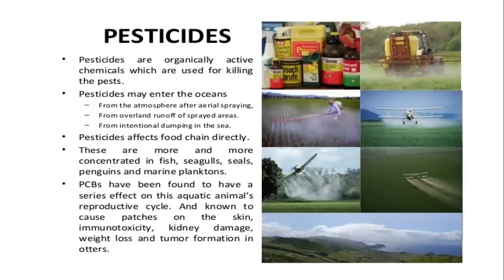Pesticides are organically active chemicals used to kill pests. They may enter the ocean from the atmosphere after aerial spraying, from overland runoff of sprayed areas, or from intentional dumping in the sea. Pesticides affect the food chain directly and become increasingly concentrated in fish, seagulls, seals, penguins, and many planktons. Pesticides have serious effects on aquatic animals' reproductive systems and are known to cause skin lesions, immunotoxicity, kidney damage, weight loss, and tumour formation.